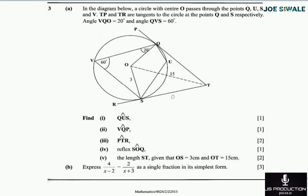Question B reads: express 4 divided by (x minus 2) minus 2 divided by (x plus 3) as a single fraction in its simplest form.